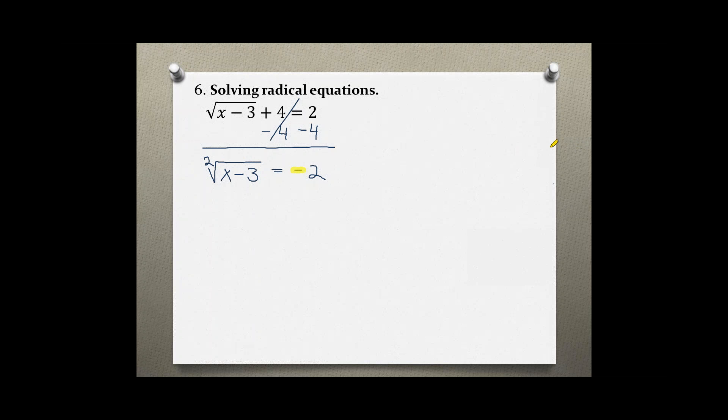But if you don't realize that at this step, then you would have to continue. So let's continue with this problem and see what happens. We would square both sides because the index and the power would cancel each other out. So we have x minus three, and on the right side, we get a positive four.